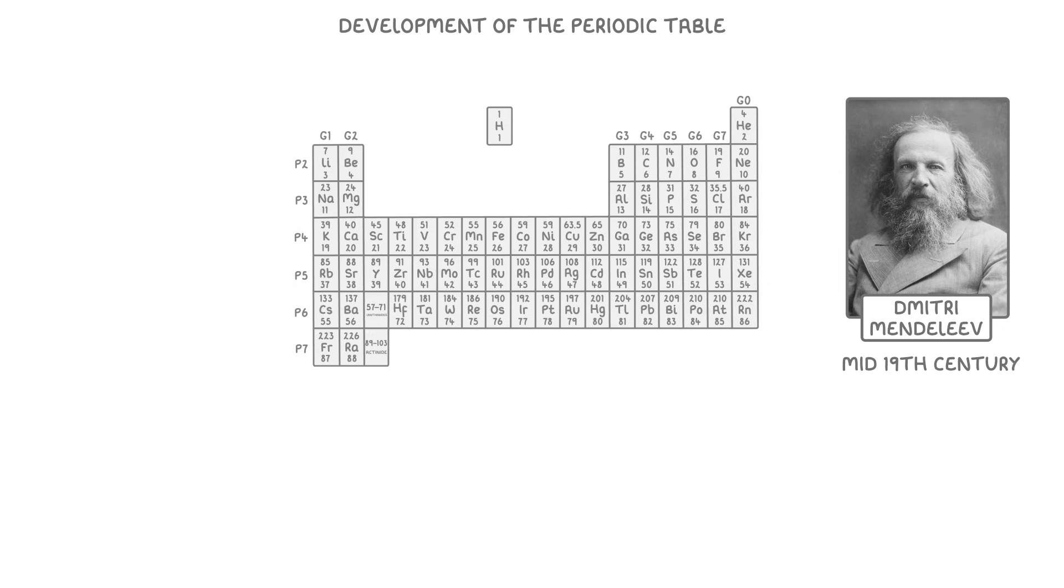As we saw in our video on elements, everything in the universe is created from different combinations of the elements in this table. Just like a book, it's read from left to right and from top to bottom, with the elements arranged in order of increasing atomic number, which represents the number of protons in the atoms of that element.